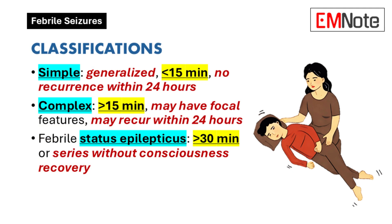Simple febrile seizures are usually brief — they last less than 15 minutes, and they're generalized, meaning they affect the whole body, and they don't come back within a 24-hour period. So if you're seeing a child who's having a short, generalized seizure that stops on its own, that's likely to be a simple febrile seizure.